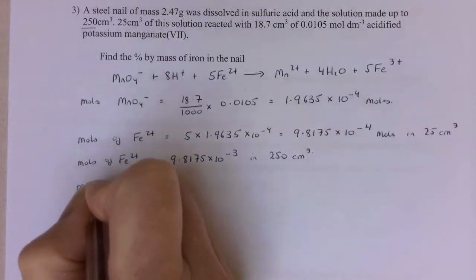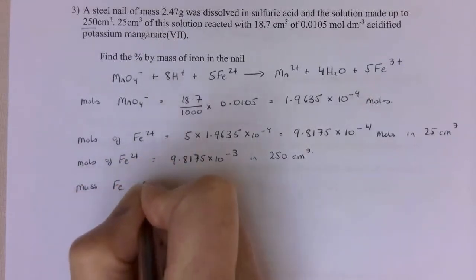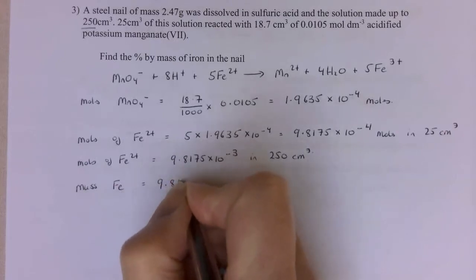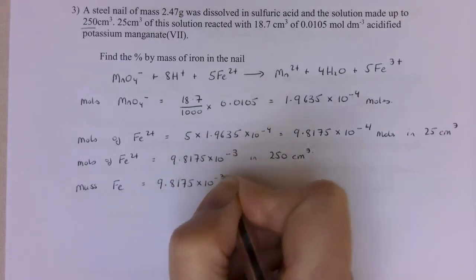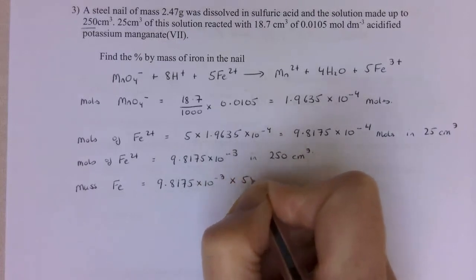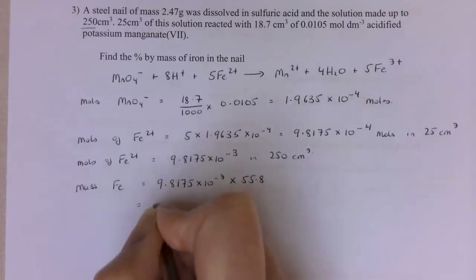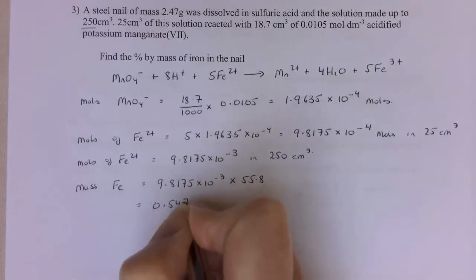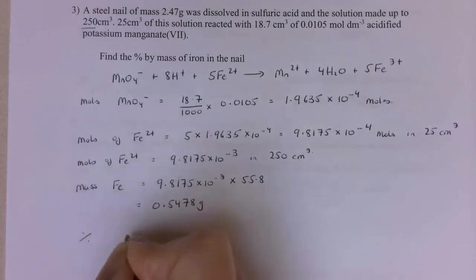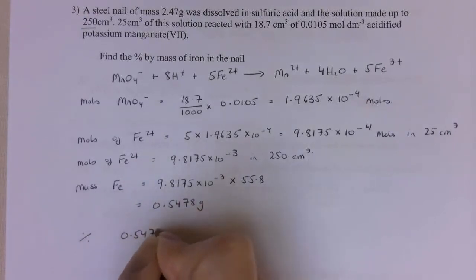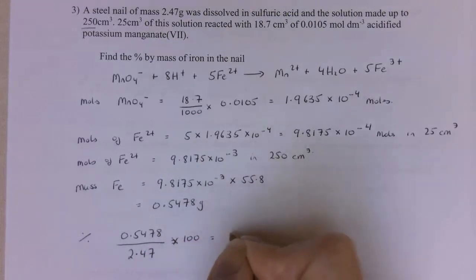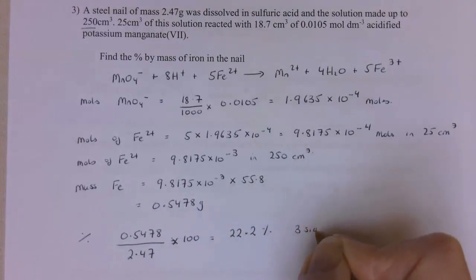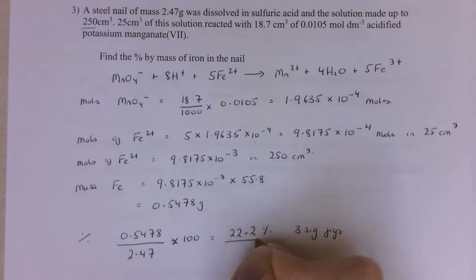So I can now find the mass of my iron, which is going to be my moles, 9.8175 times 10 to the minus 3 times the RMM of iron, which is 55.8. And I get a mass of 0.5478 grams. So the percentage is 0.5478 divided by 2.47, and that also times by 100 for percentage. And that gets 22.2% to 3 sig figs. And that is my final answer.